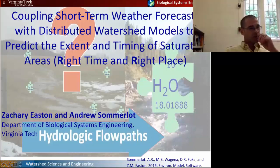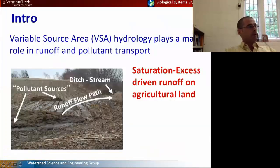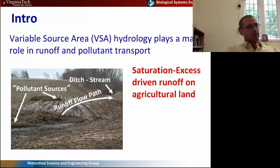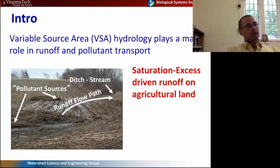We do have a paper that just came out in Environmental Modeling and Software that details this specific model. What are we trying to do here? We're looking at trying to protect saturated areas from excessive nutrient loss in these watersheds. It's based on the theory of variable source area hydrology, which plays a major role in runoff and pollutant transport in many of these temperate humid mountainous watersheds of the east coast.